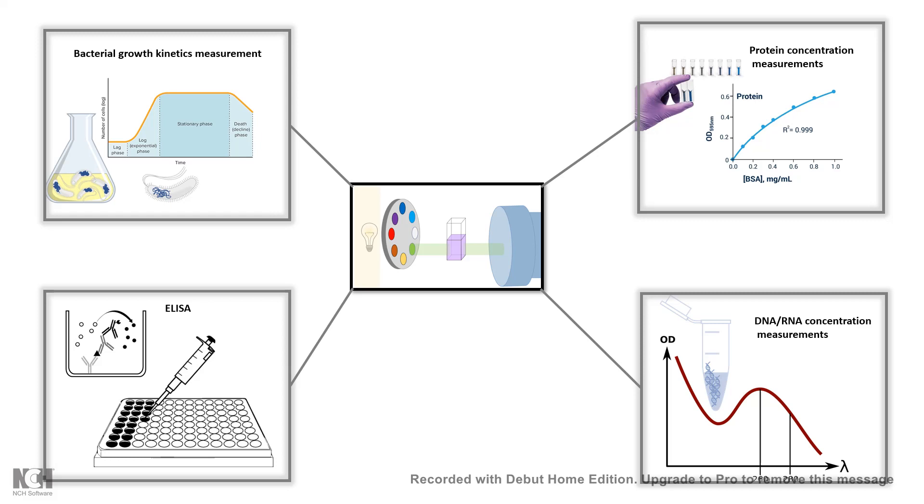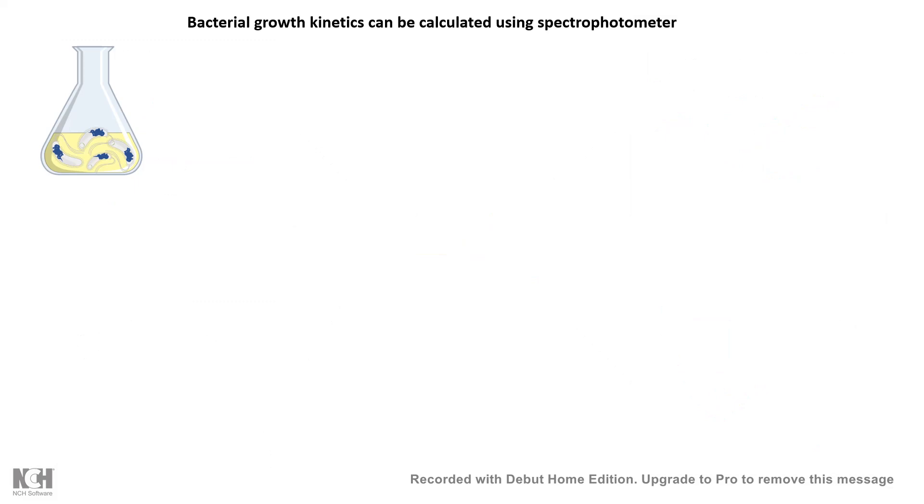So first of all, bacterial growth kinetics can easily be calculated by spectrophotometer. So let's say we have a bacterial culture which is growing overnight. We can take a small amount of the culture in a cuvette and we can read it in a spectrophotometer at specific wavelength.